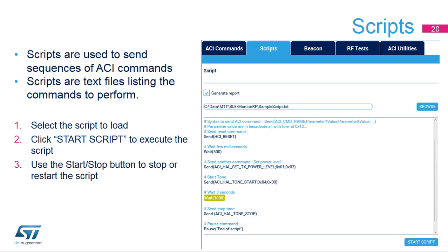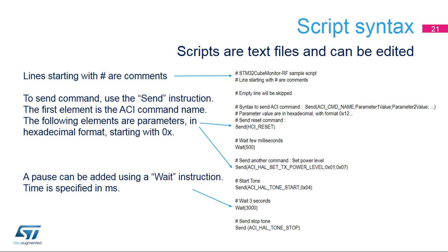A script can be used to simplify the sending of repetitive tasks via ACI commands. A sequence of ACI commands is stored in a text file and is played back by the tool. To start the script, select the file to play and click START SCRIPT. The script is displayed on the main window and the current line is highlighted in green. Press START STOP to stop or restart the script. The script syntax is simple: lines starting with a hash symbol are comments; the SEND instruction sends an ACI command; the WAIT instruction inserts a pause. There are more commands available to display user messages and create loops. Please refer to the user manual for a detailed description of available commands.